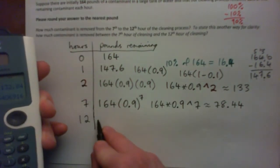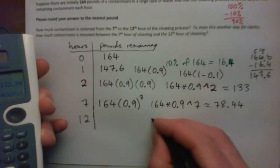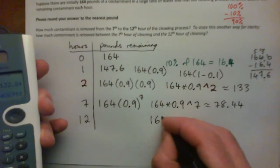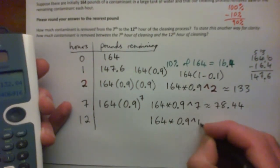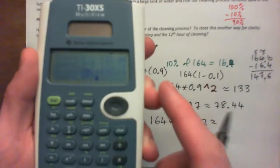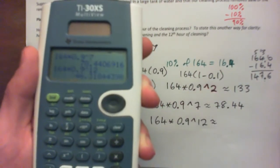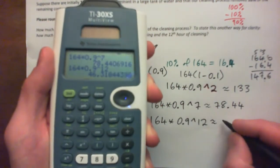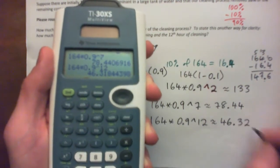After 12 hours, what's remaining? Again, calculator speak, it's 164 times 0.9 to the power of 12. And I'm going to use my arrows. I'm going up here. Press enter. I'm going to take that 7, turn it into a 12. Press enter. And it gets about 46.32 pounds remaining.